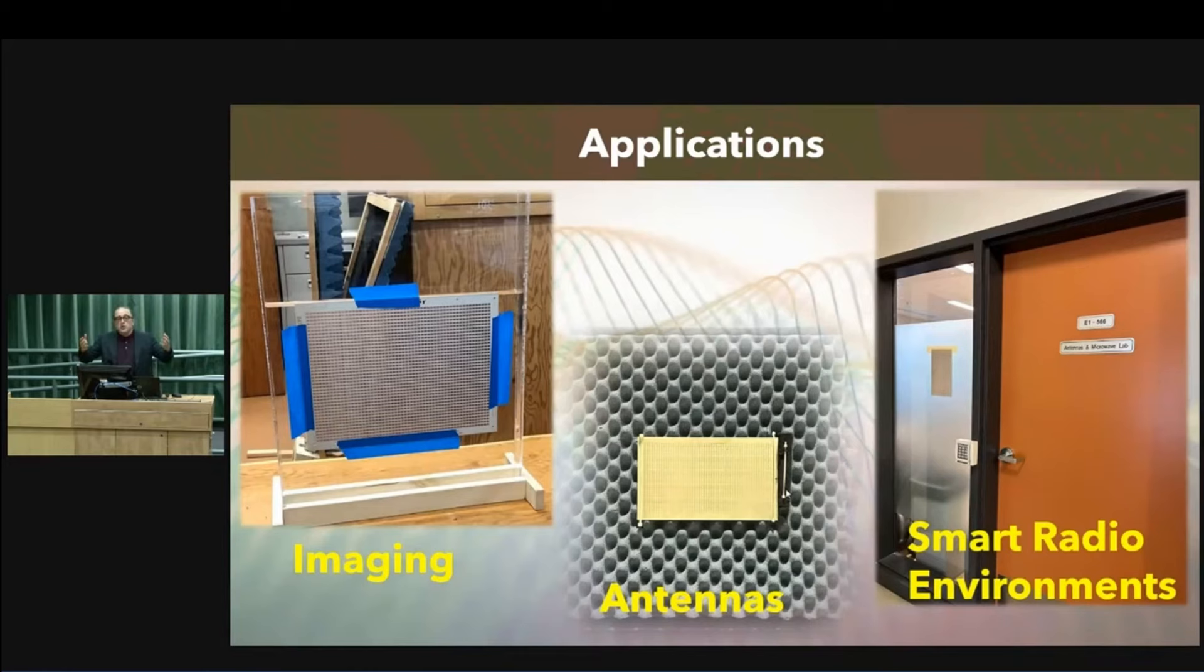But imagine if you can have these surfaces, like a thin poster on the walls of this theater, then you can actually control the wireless propagation channel that you have. So it's not only transmitter and receiver, but you control the propagation too. That would be one application.